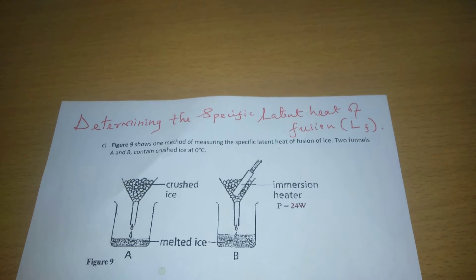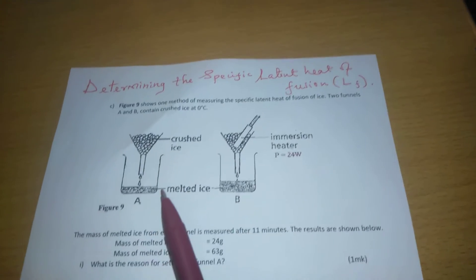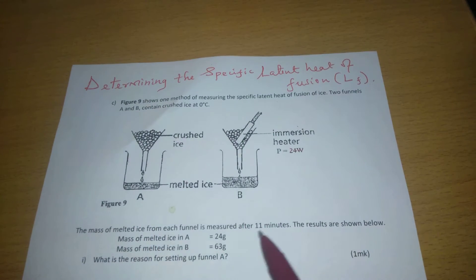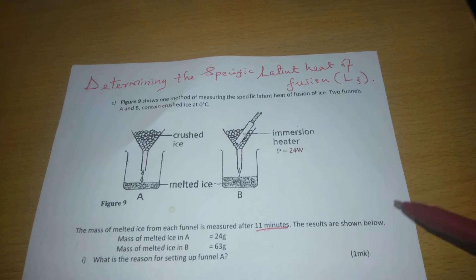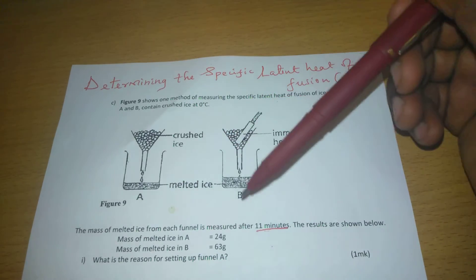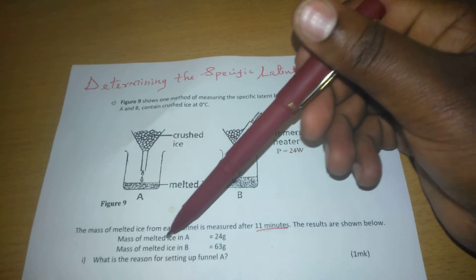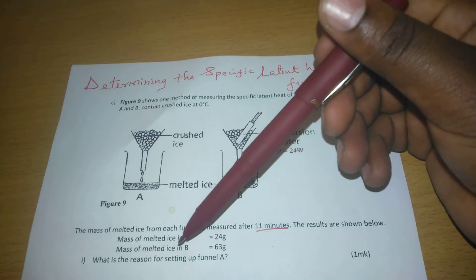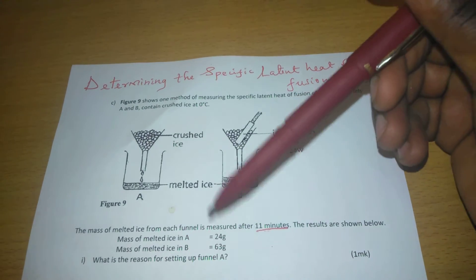Now we can proceed to the data collected from this experiment. The mass of melted ice from each funnel is measured after 11 minutes. The results were shown below. We have mass of melted ice in A, 24 grams, and mass of melted ice in B, 63 grams.